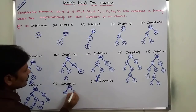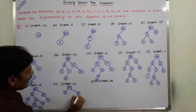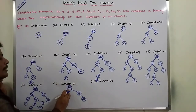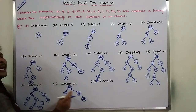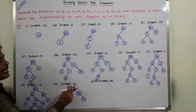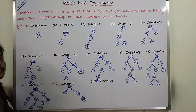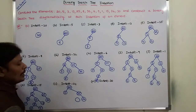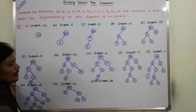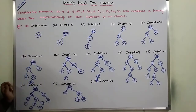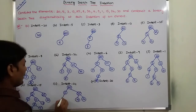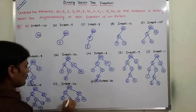Next, we have to insert element 24 into the existing binary search tree. First, 24 is compared with root node 20 — it is greater, so go to the right subtree where 25 is there. 24 is compared with 25 — 24 is less than 25, so go to the left subtree. Here the left subtree is empty, so we create a node and insert value 24. Now 24 becomes the left child of node 25. This is the binary search tree after inserting element 24.